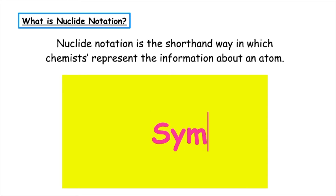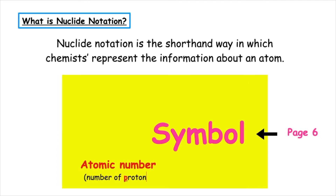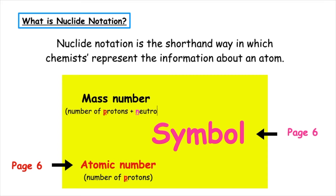We find the chemical symbol on page 6 of the data booklet, and the position of this element is known as the atomic number, which can also be found on page 6, and is equal to the number of protons found inside the nucleus. The mass number is the number of protons and neutrons, which can be found on page 7, or can be calculated when you are given the number of protons and neutrons.